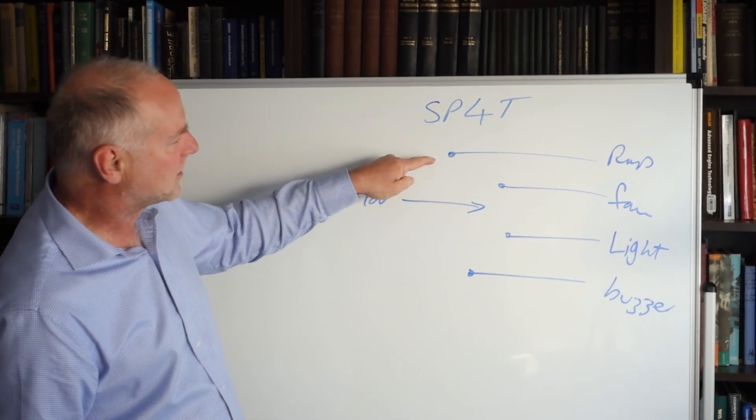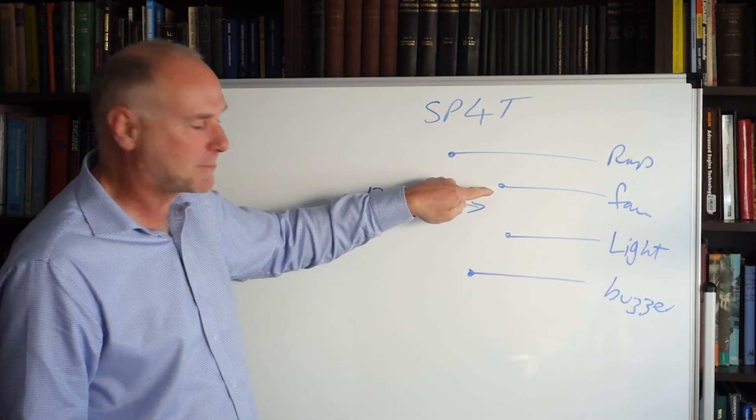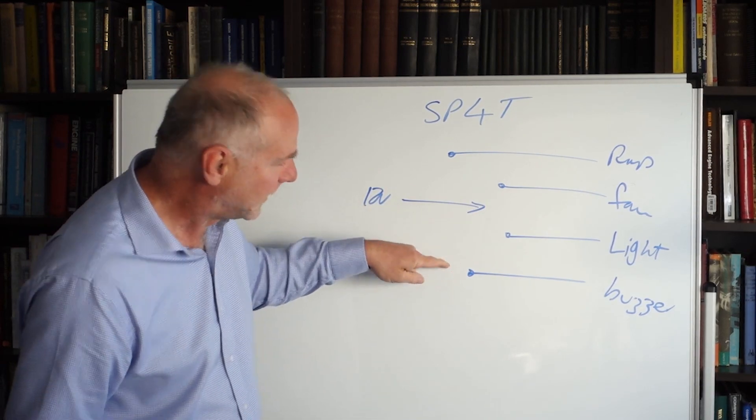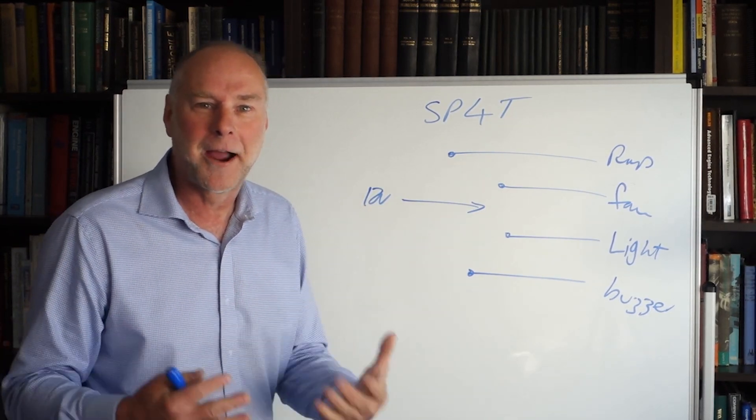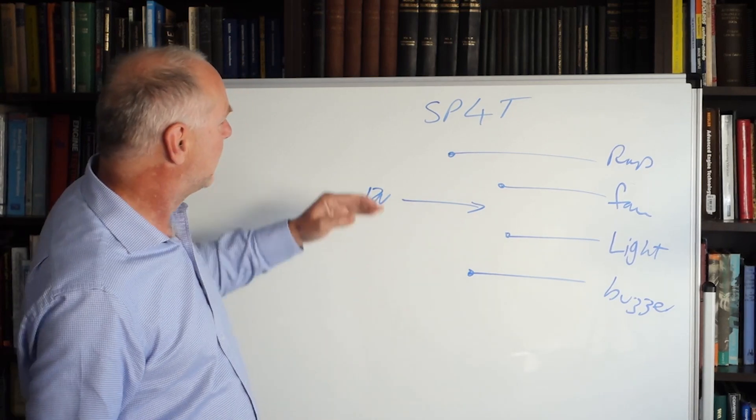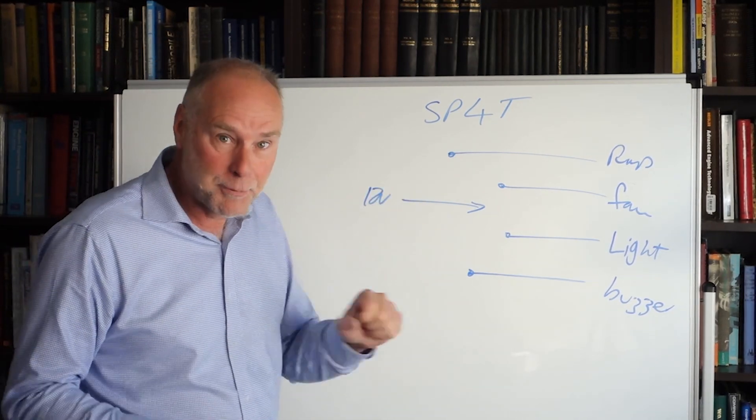Well when we switch the switch to there the pump runs. When we switch it to the next position the fan runs. And when we switch to the next position the light and then the buzzer. So we can operate four different outputs with the one rotary switch and with the one input.